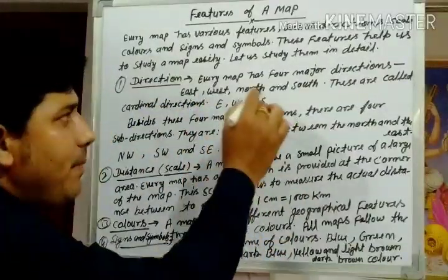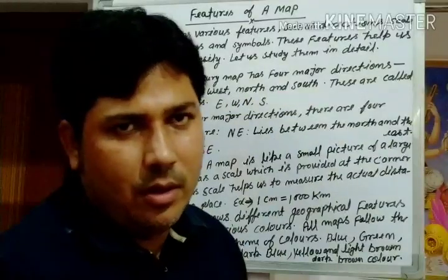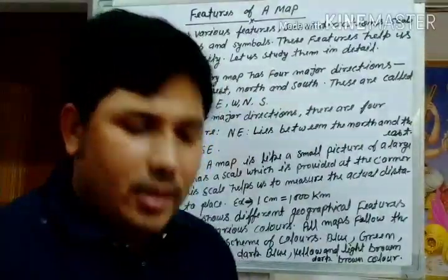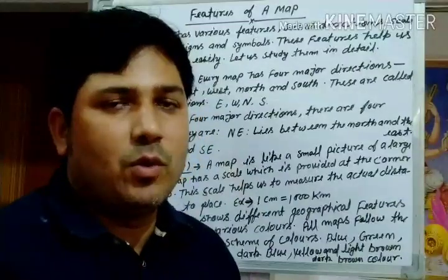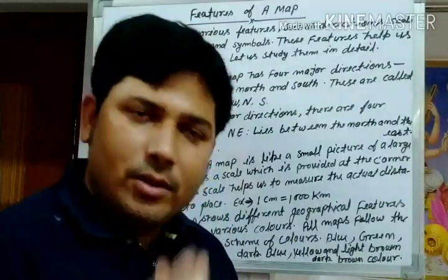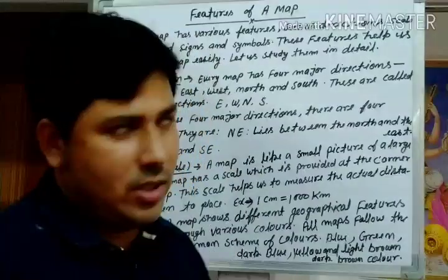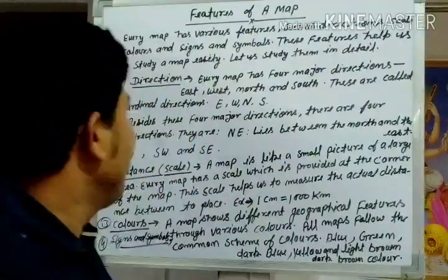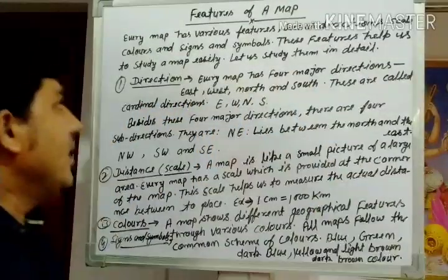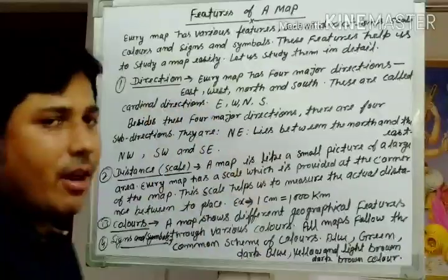Every map has four major directions, as you know. Every map has four directions: north, south, east, and west. These are called the cardinal directions.